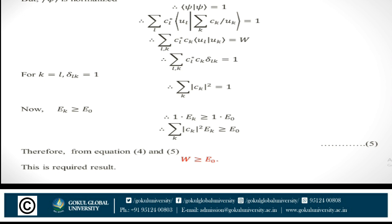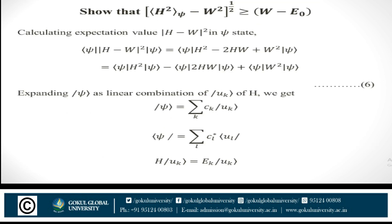The variation method is performed by first choosing for |ψ⟩ a suitable function depending on a number of parameters a₁, a₂, ..., aᵣ. When this is done, we can vary the parameters and the value of W also varies. Minimization of W is then accomplished by finding those values of a₁, a₂, and so on, such that √(⟨H²⟩ - W²) ≥ W - e₀.